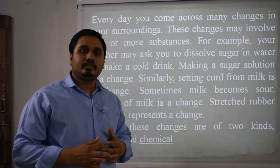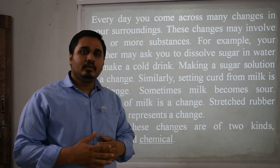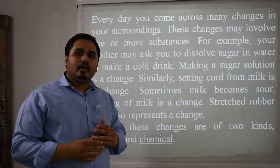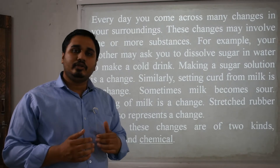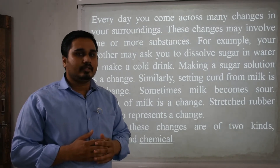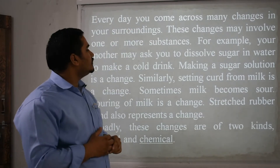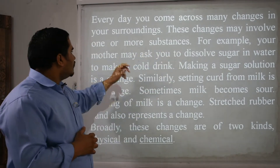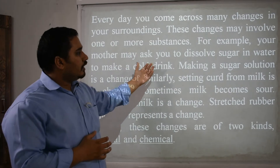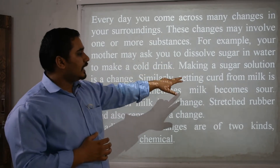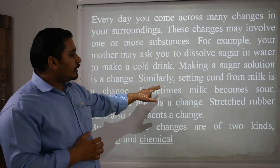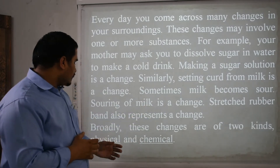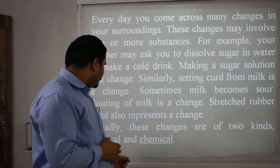As you all know, we are having so many changes surrounding our environment that are physical and chemical changes. Those changes which reduce size and shape but remain in their original entity are called physical changes. And those changes which elaborate or modify themselves into a new specified object are called chemical changes. Every day you come across many changes in your surroundings; these changes may involve one or more substances. For example, your mother may ask you to dissolve sugar in water to make a cold drink — making a sugar solution is a change. Similarly, setting curd from milk is a change, souring of milk is a change, and a stretched rubber band also represents a change. Broadly, these changes are of two kinds: chemical and physical.